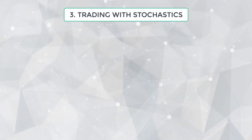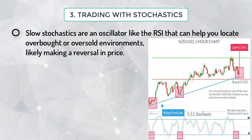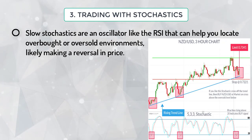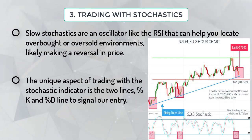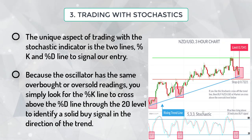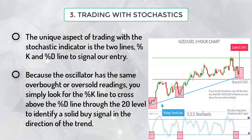Trading with Stochastics: Slow Stochastics are an oscillator, like the RSI, that can help you locate overbought or oversold environments likely making a reversal in price. The unique aspect of the stochastic indicator is the two lines — %K and %D — used to signal entry. Because the oscillator has the same overbought or oversold readings, you simply look for the %K line to cross above the %D line through the 20 level to identify a solid buy signal in the direction of the trend.